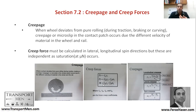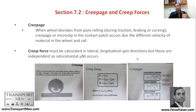Creep force must be calculated, and there are different ways of doing so. It depends on the wheel velocity, the rail velocity, and other aspects. We won't go into calculation details here, but it's important to remember the main forces: B0, B1, B2, and creep forces.